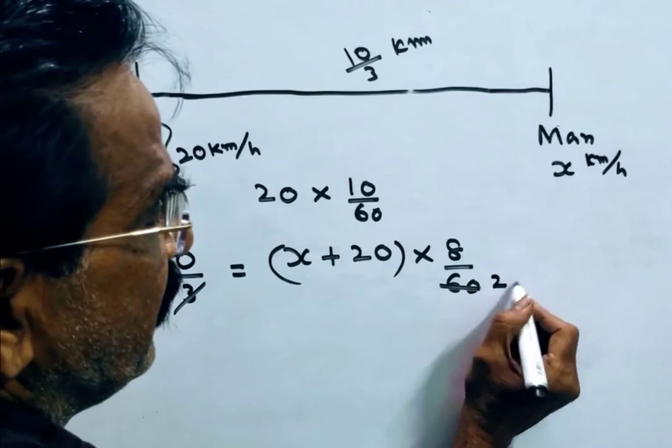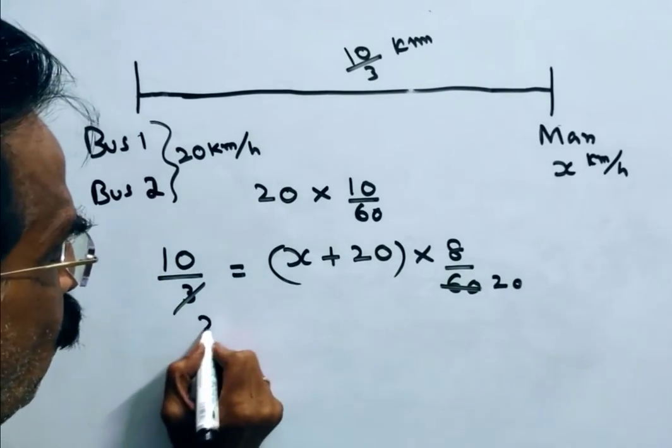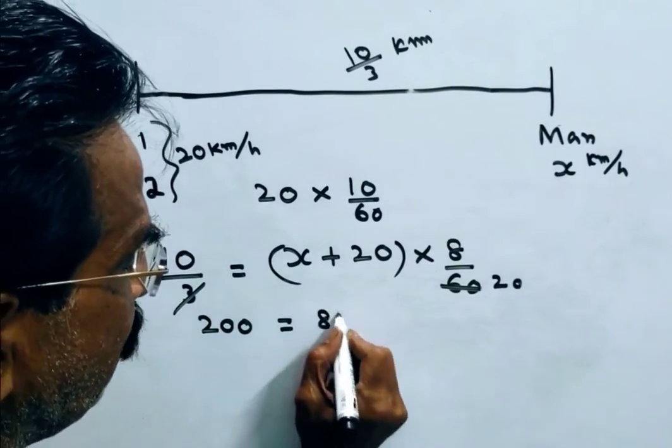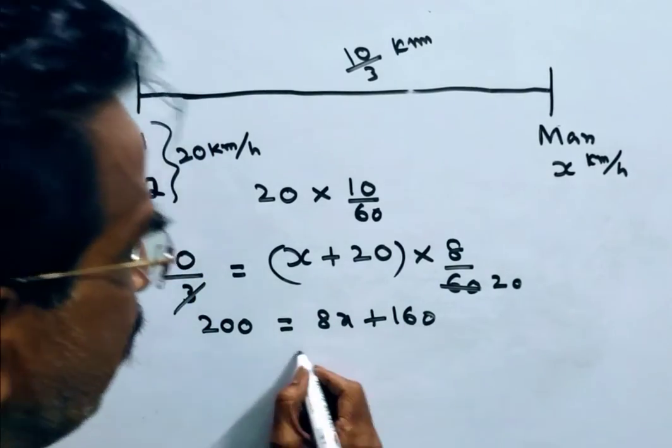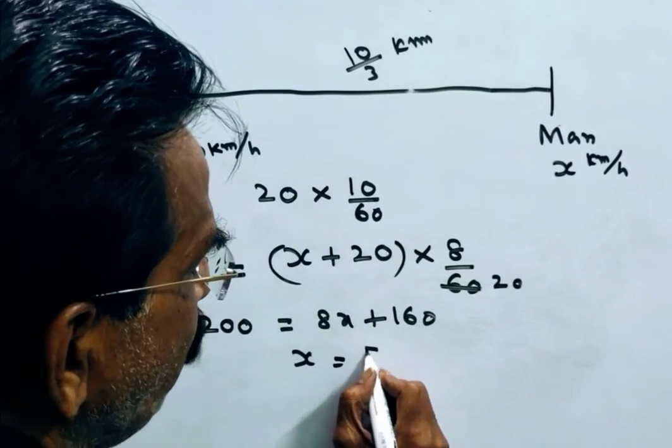So 200 is equal to 8x plus 160. 8x is equal to 40. x is equal to 5 kmph.